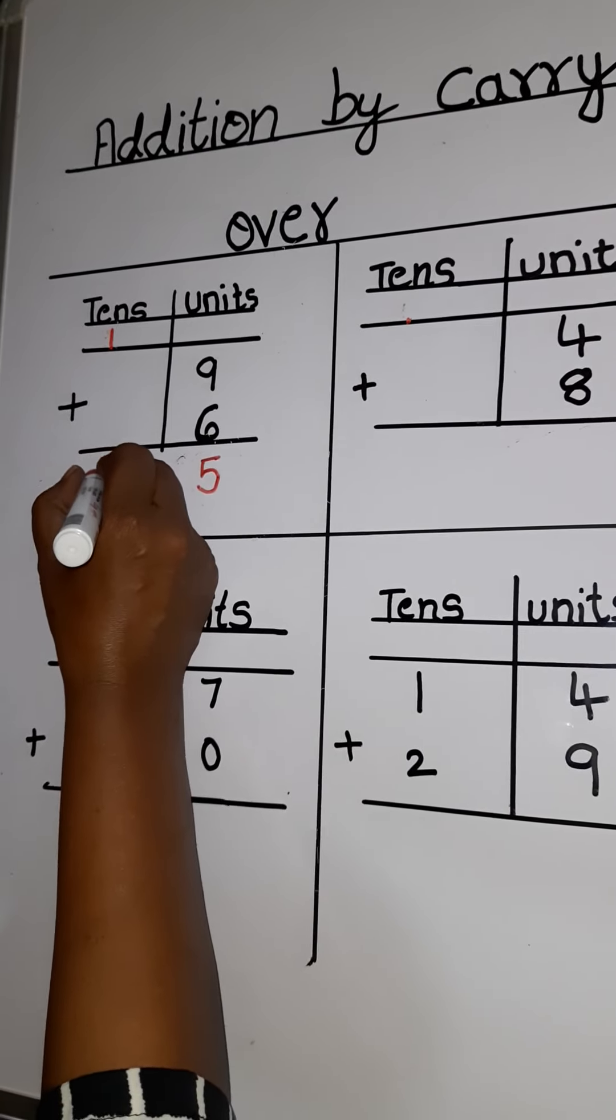1 and 3. 1 plus 3 equals to 4. So here there is no carry over.